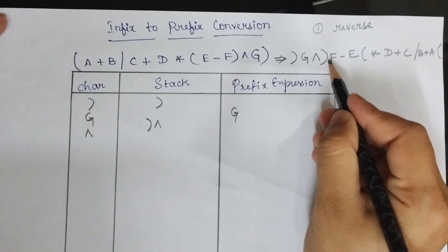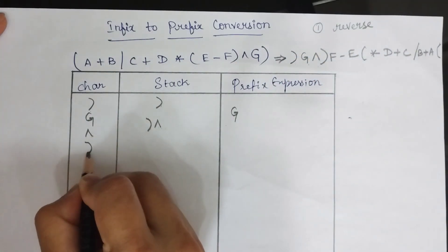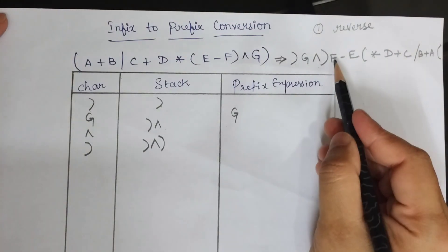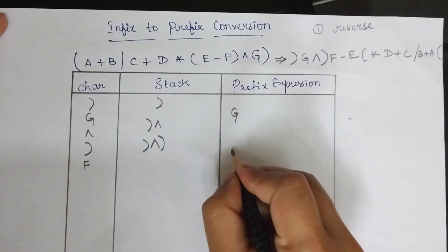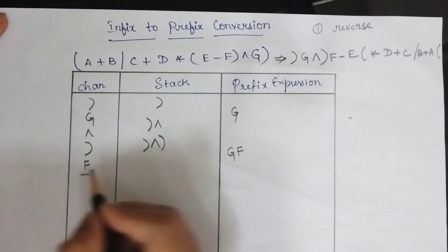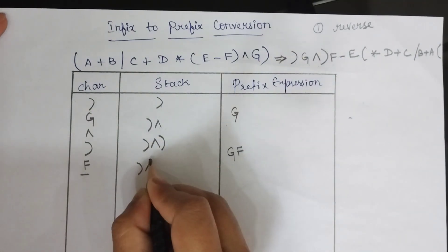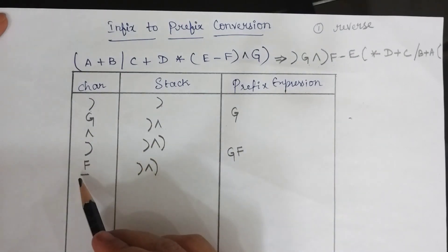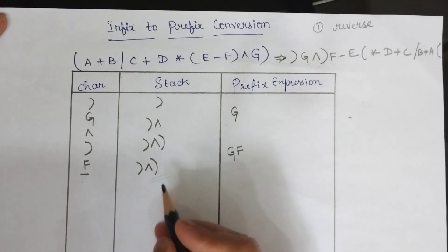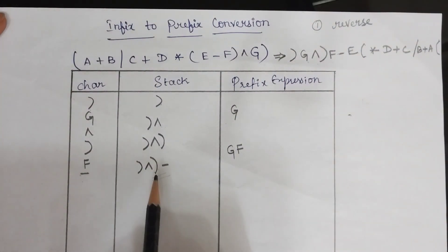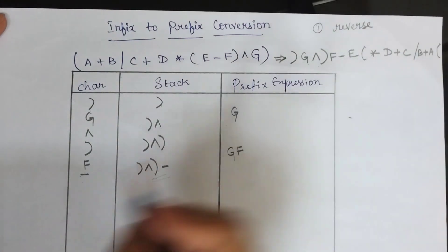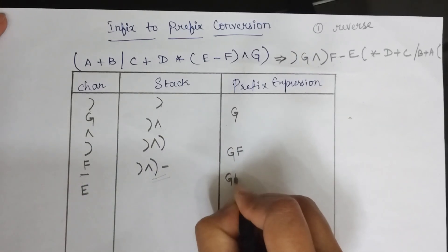The next character is again a close parenthesis, so push it into the stack. Then F is an operand, so add F to the prefix expression. Next is minus, which is an operator. Before pushing, check the top of the stack — it is a close parenthesis, so when the top is a parenthesis, don't check any condition; just push minus into the stack. After minus, the character E is an operand, so add it to the prefix expression.